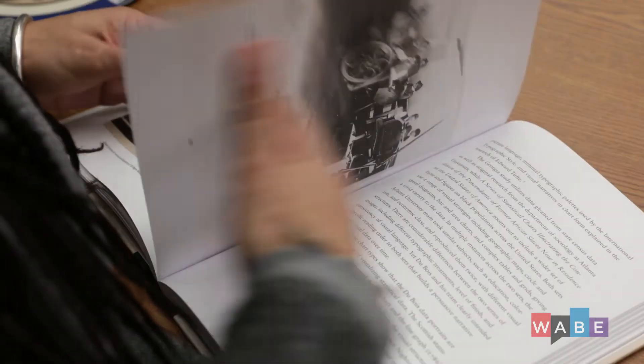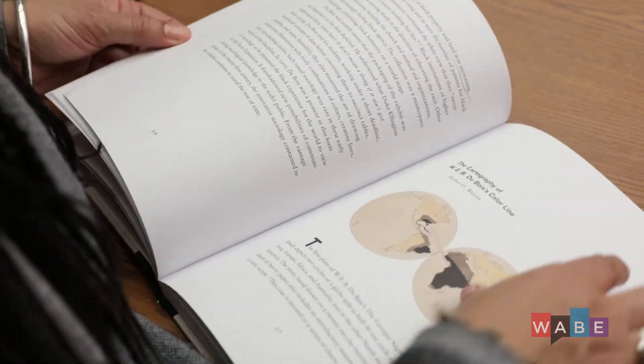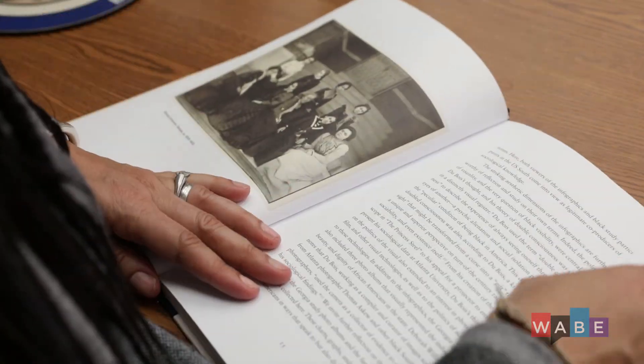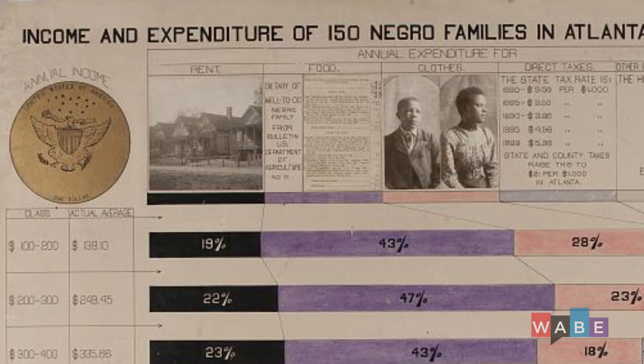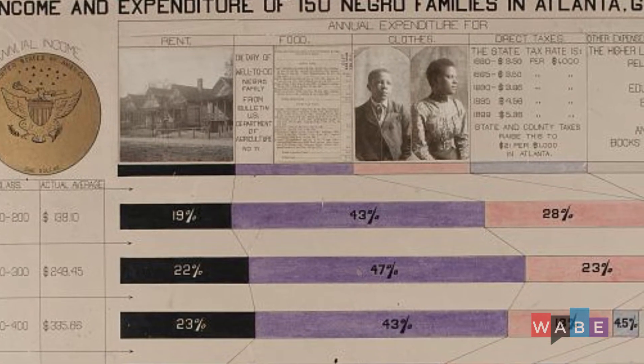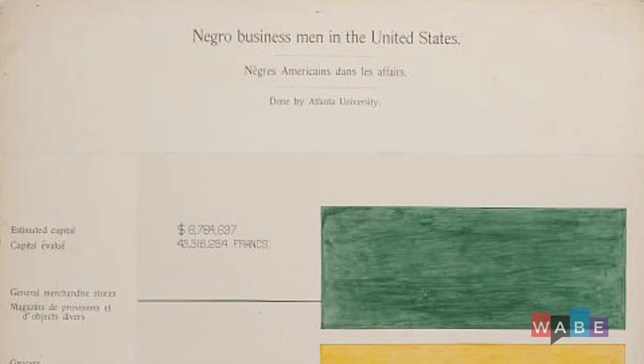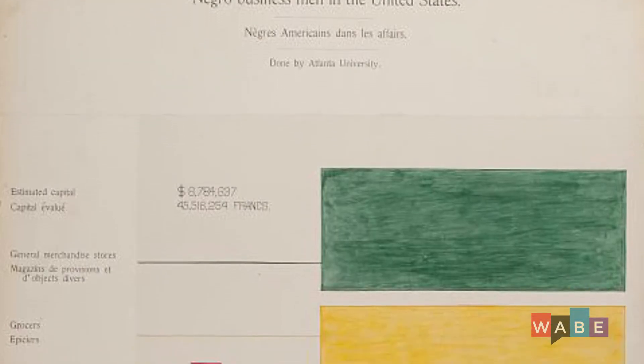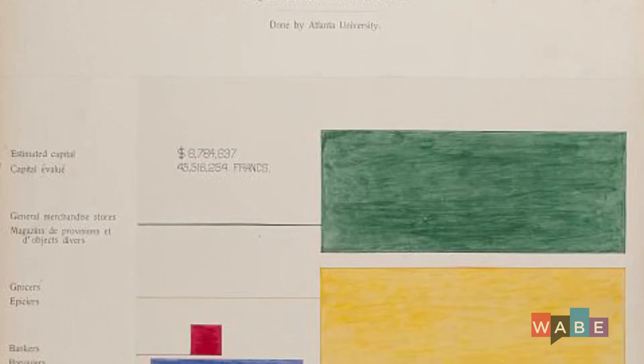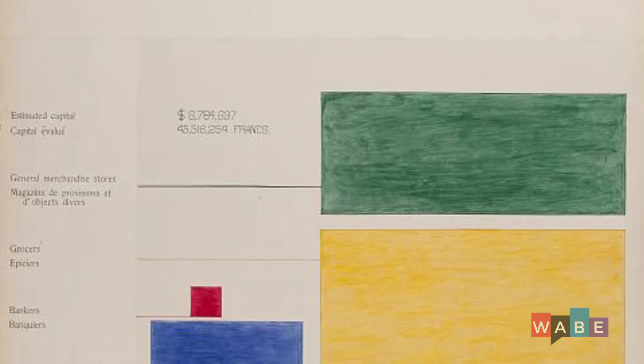Whether it's 1900 or whether it's 2019, people can see this information and use it in a way that Du Bois wished he could have, but never had the opportunity to. This is very much the 1900 version of data for black lives, which some folks are working on today — thinking about the use of statistics and data to forward social justice and progress, and the kind of use of data that's about black life and not black death. And that's really what Du Bois and his group are doing in 1900.